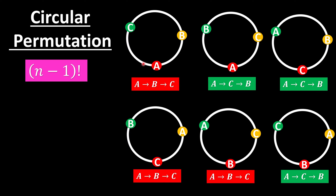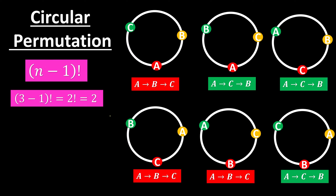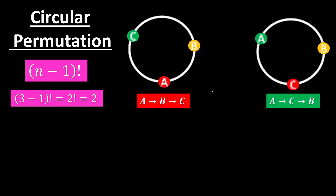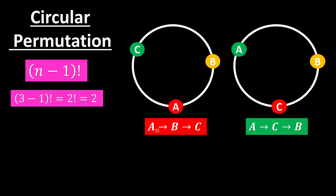So for this case of three persons, we use (3−1) factorial, which is 2 factorial. And indeed there are only two unique arrangements left: ABC and ACB. This formula applies when we take care of directions.